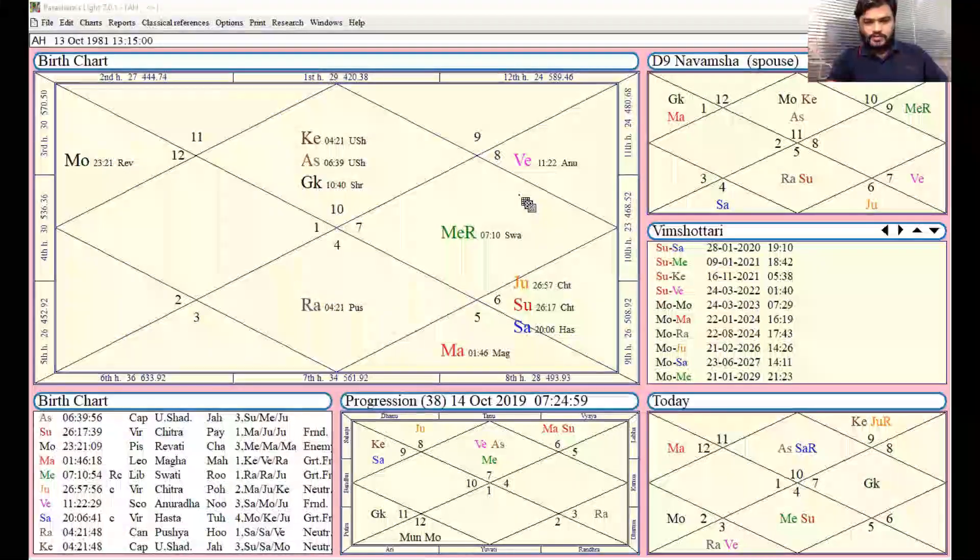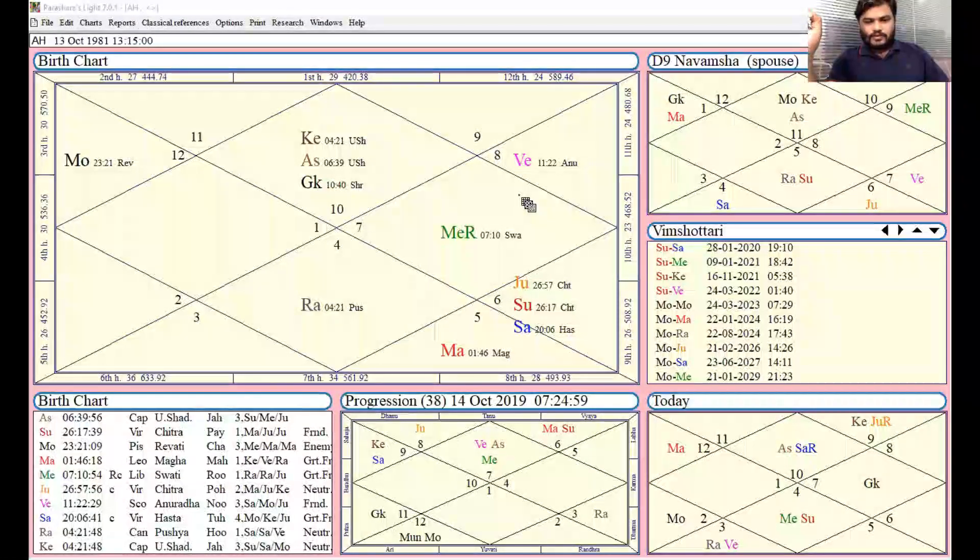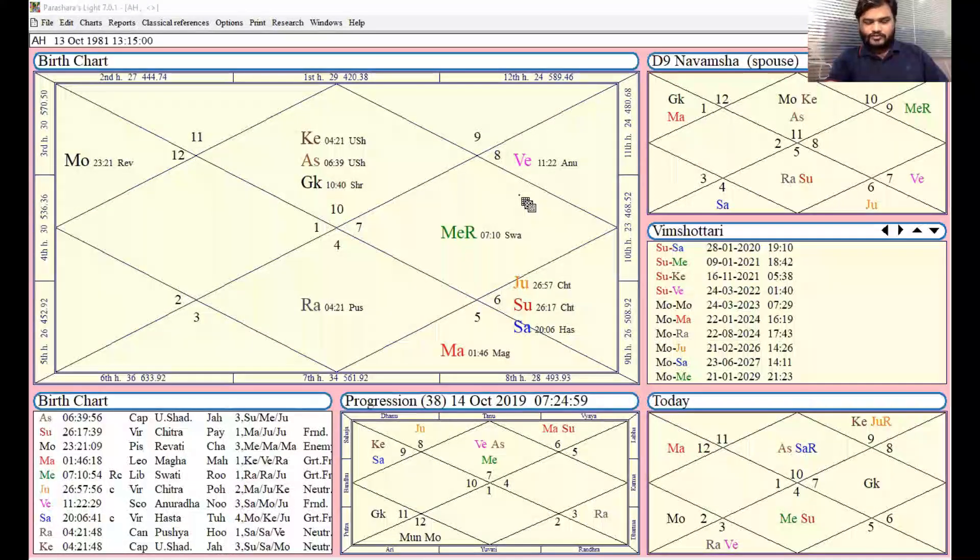Now I will show you one easiest technique of Rahu with the example of a live horoscope. You can see the horoscope on the screen. This native got married three times.